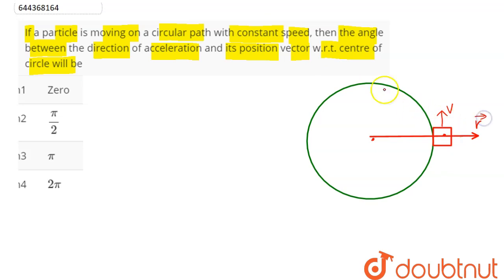Next, we can say the acceleration in uniform circular motion - as the question says constant speed, so it is uniform circular motion.